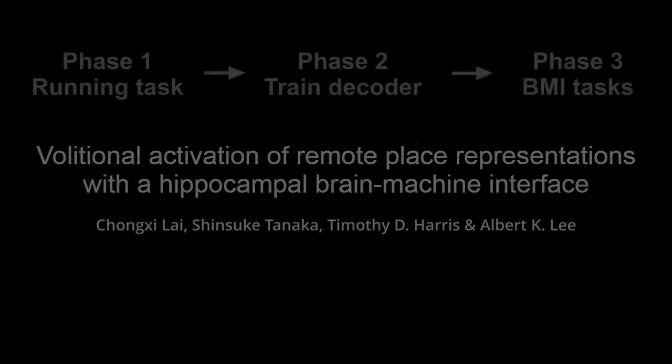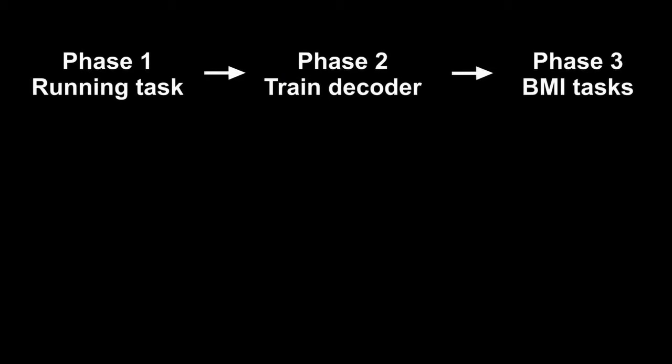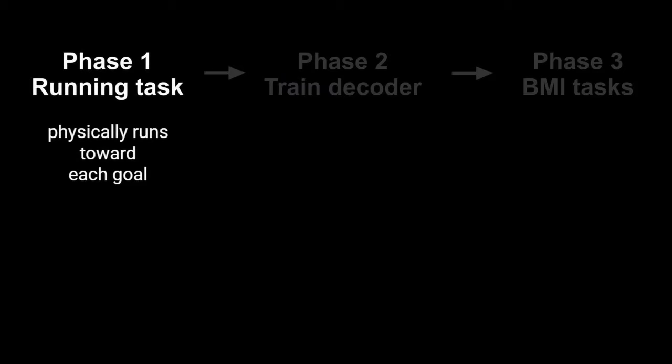We developed a brain-machine interface to test if rats can control their hippocampal activity. Our BMI experiments consist of three phases. In phase one, the animal physically runs toward each goal while its hippocampal activity is recorded.